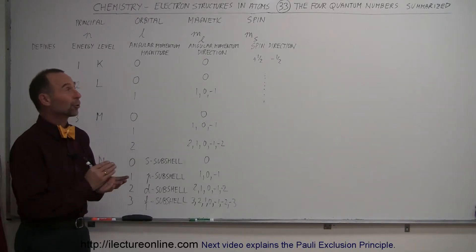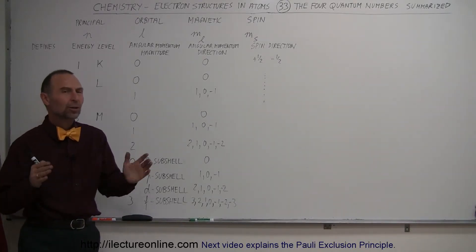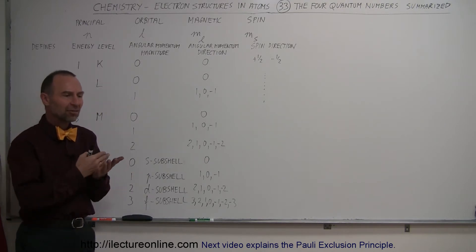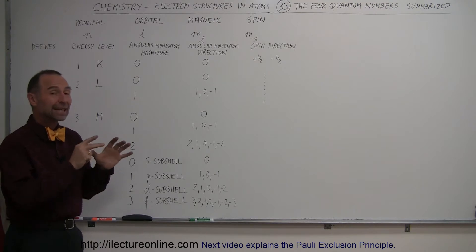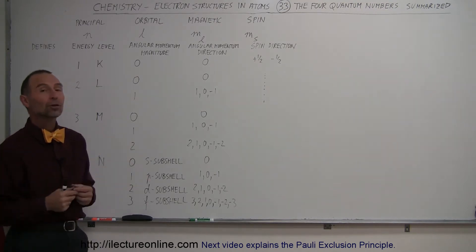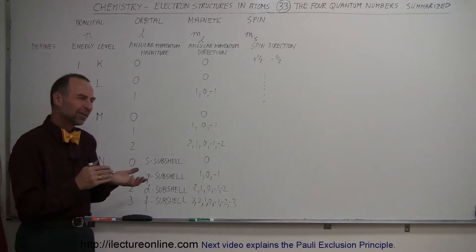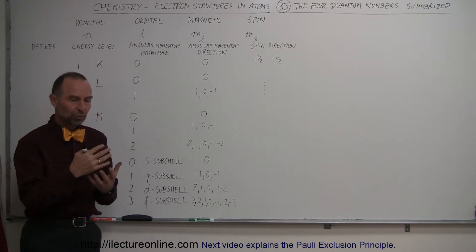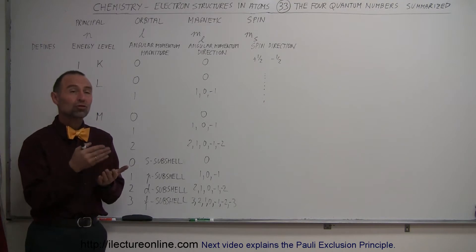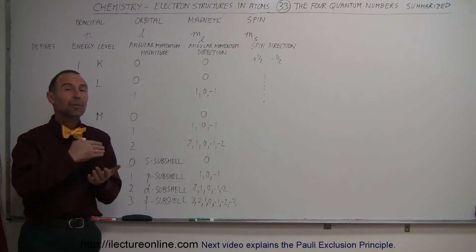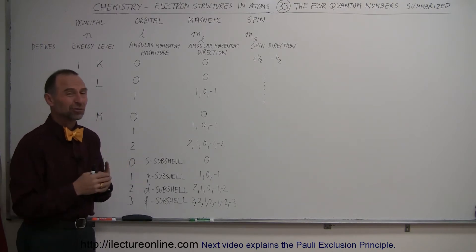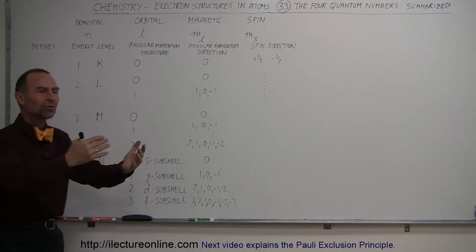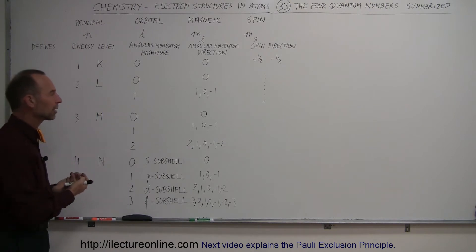Now we're going to summarize the four quantum numbers. Remember what the quantum numbers were — those are quantum mechanic numbers that represent the states, the position, the energy levels and so forth of the electrons in orbits around the nucleus. When we say orbits, that's kind of a misnomer; we should call them orbitals. These are shapes determined by the solutions of the Schrödinger equation that define the probability of where we're going to find those electrons — the highest probability of where we're going to find them — and those probabilities define the shapes of the orbitals where the electrons will reside.